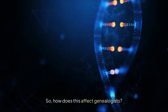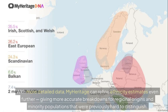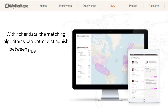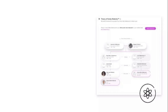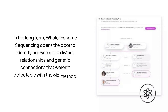So how does this affect genealogists? First, better ethnicity accuracy — with more detailed data, MyHeritage can refine ethnicity estimates even further, giving more accurate breakdowns for regional origins and minority populations that were previously hard to distinguish. Second, more precise DNA matches — with richer data, the matching algorithms can better distinguish between true genealogical matches and coincidental similarities, meaning fewer false positives and stronger, more reliable matches. Third, potential for deeper discoveries — in the long term, whole genome sequencing opens the door to identifying even more distant relationships and genetic connections that weren't detectable with the old method.